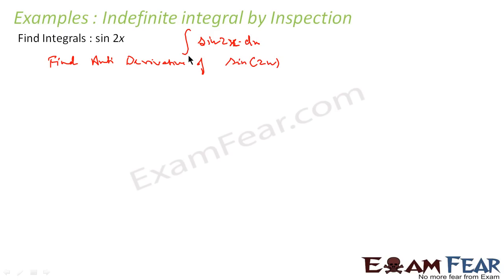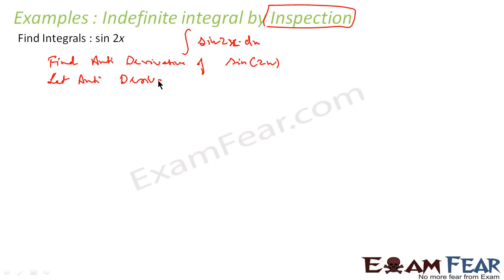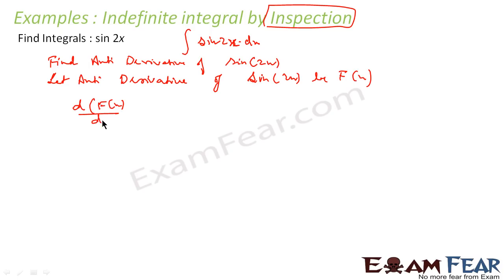Please note, I can solve the question using different ways, but since this is the first question we are solving and trying to solve this by inspection, that is, anti-derivative. So I want to find the anti-derivative of this. That means I will say: let the anti-derivative of sin 2x be some function capital F(x). In that case, d of F(x) by dx is nothing but sin 2x. Because I have to find F(x), and I know that if you differentiate F(x), you will get sin 2x.